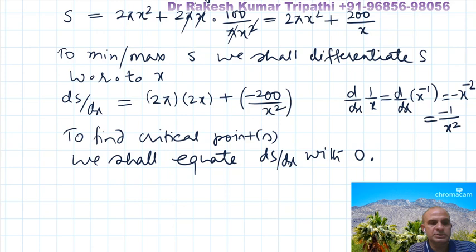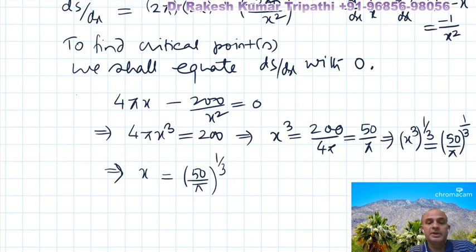Since x³ = 50/π, we take the cube root of both sides. By the law of indices the cubes cancel on the left, giving x = (50/π)^(1/3). This is the radius of the cylindrical cane in centimeters. We still need to find y (the height), since both radius and height are the dimensions of the cane.